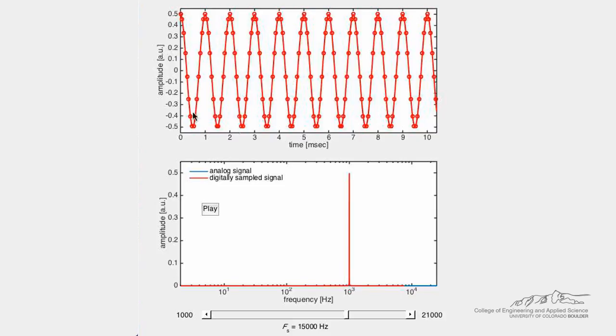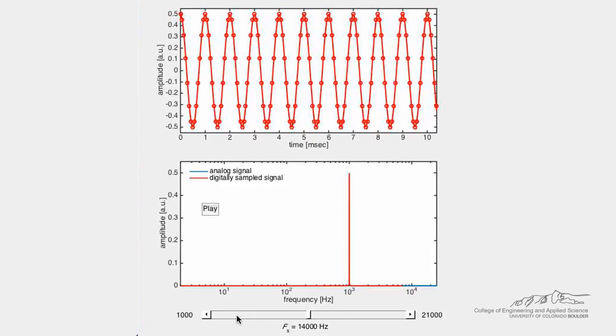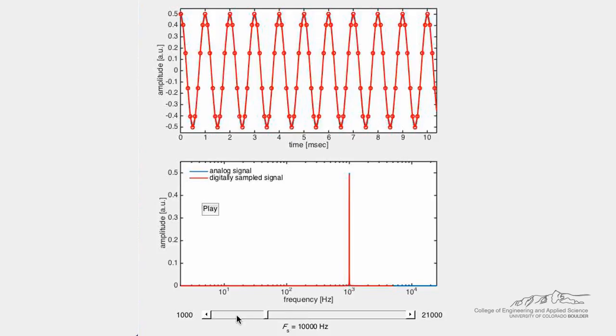Each signal is shown in both the time domain and the frequency domain. As the sampling frequency decreases, we start to lose information in our digital representation.